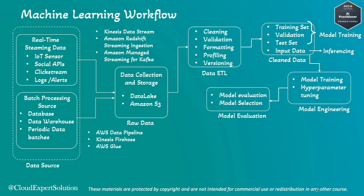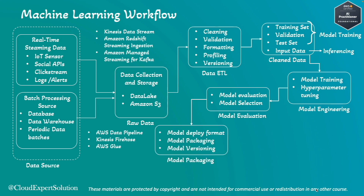The next step is model evaluation. In this evaluation process, we evaluate the model against certain criteria and then select the model that is the best fit for our use case. Once the model is selected, the next step is model packaging. Packaging includes the code and configuration, and we are packaging for model deployment. At this stage, we can also maintain different versions of the model.